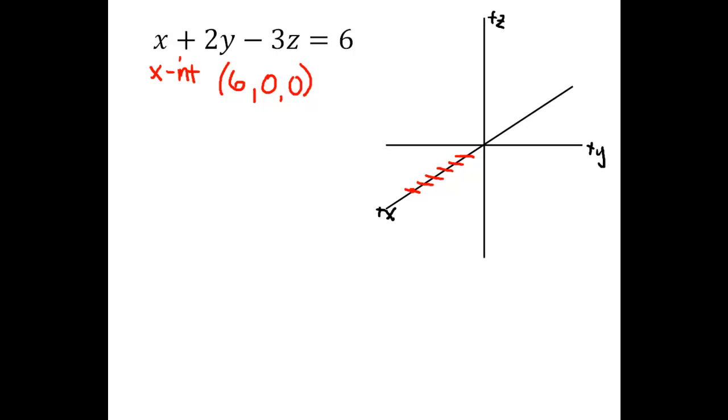And then we can do the other intercepts pretty easily too. The y-intercept will have x and z being 0, so if we think about plugging in 0 for x and z, we'll just be left with 2y equals 6, which gives us y equals 3.